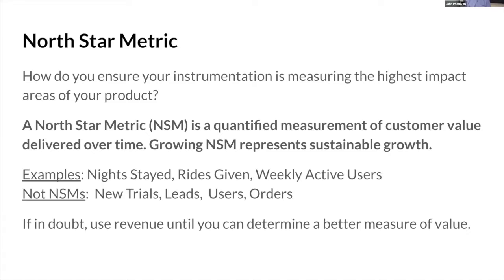Examples: number of nights stayed might be a good one for Airbnb. Rides given for Uber. Weekly active users for a lot of SaaS software like Zendesk, Slack, or Zoom — how many users are opening your application per week. If no one is opening Zoom, they might cancel — there's no reason for them to keep paying. Similarly, if they're not staying at your hotel, they may have moved to a different chain.